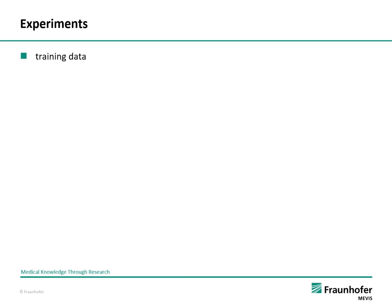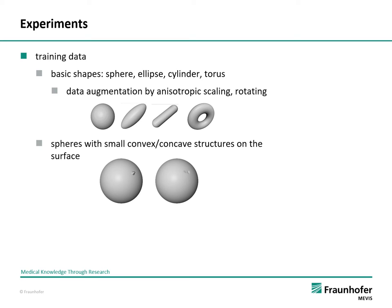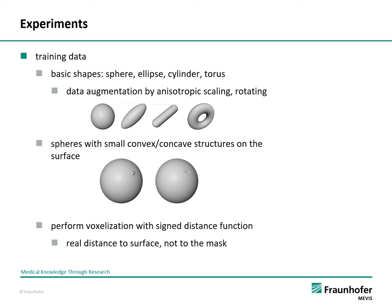Now we need training data. We decided to use artificial data. The basic shapes used are sphere, ellipse, cylinder, and torus. Data augmentation is achieved by anisotropic scaling and rotating of these basic shapes. Additionally, a number of spheres with small convex and concave structures on their surface are created. All surfaces are voxelized with a limited signed distance function, where the voxel values are the real distances to the surface. The binary masks are derived from these distance maps by thresholding. The result is a dataset of pairs of binary masks and corresponding narrow signed distance maps, which is split for training and validation.